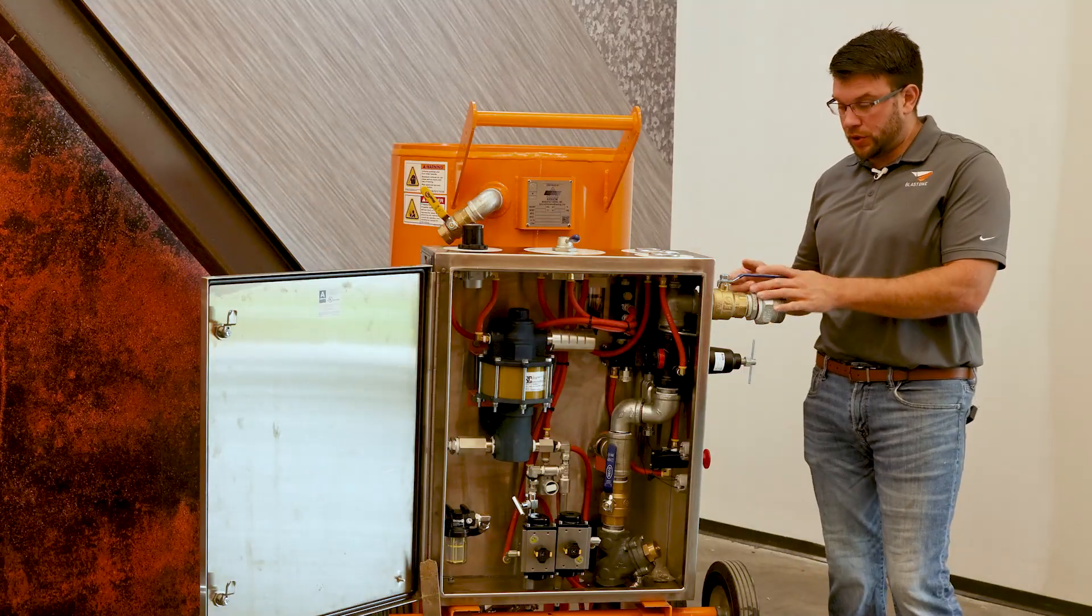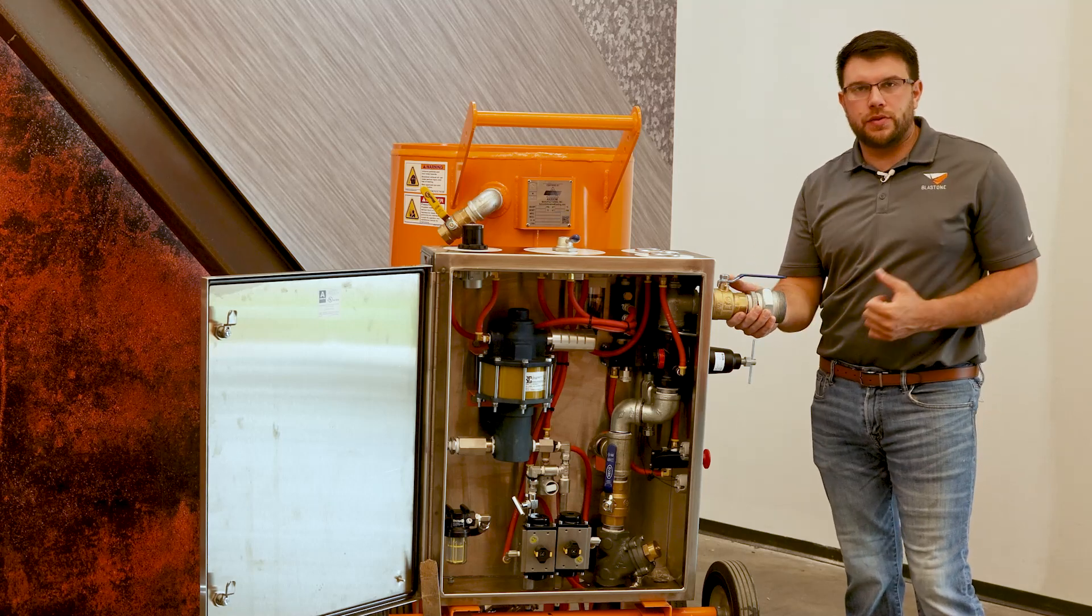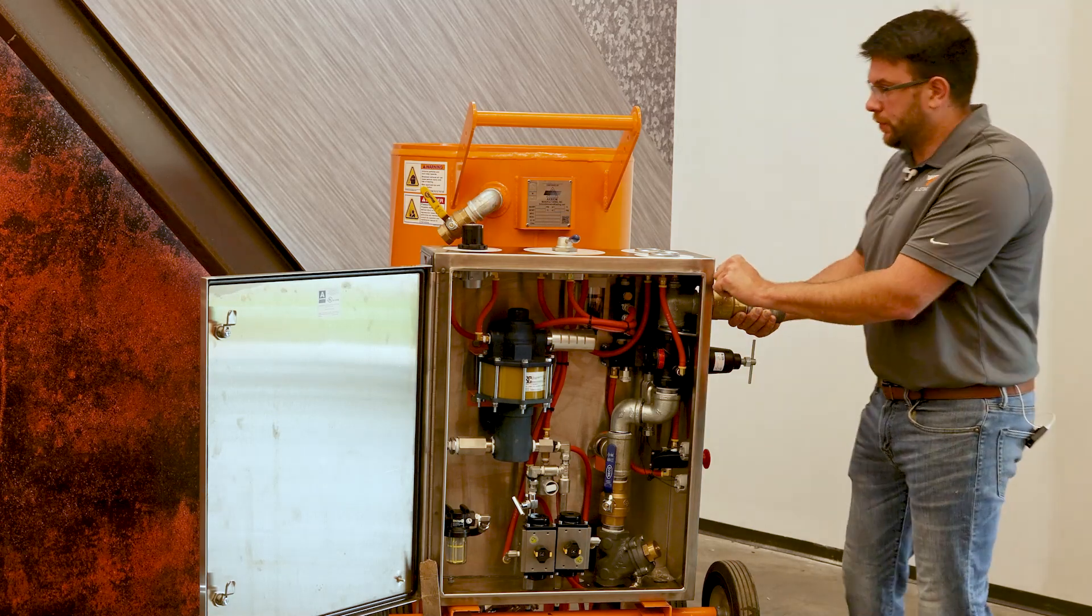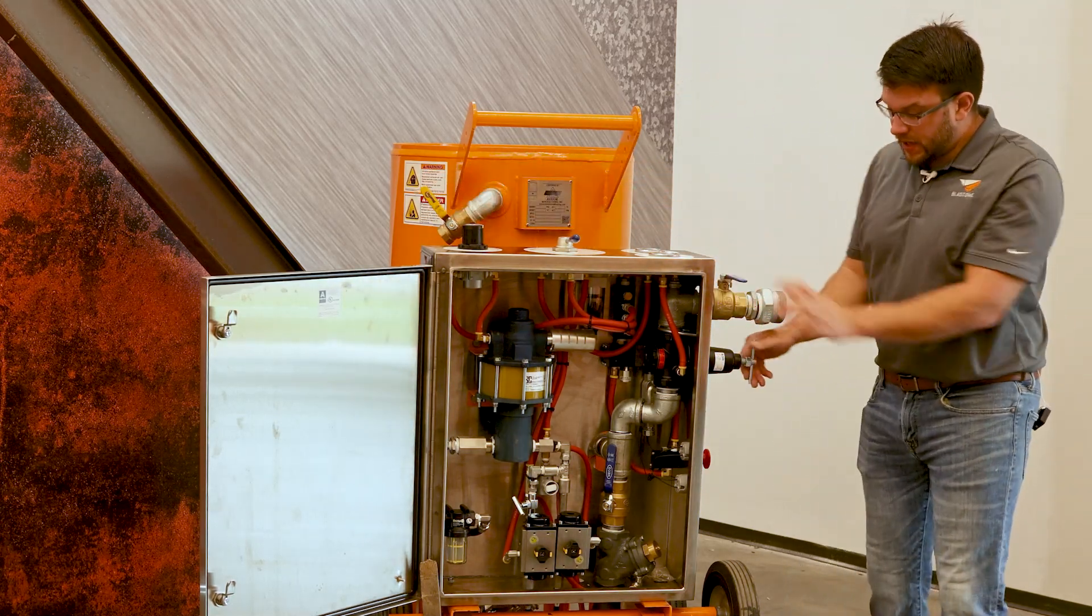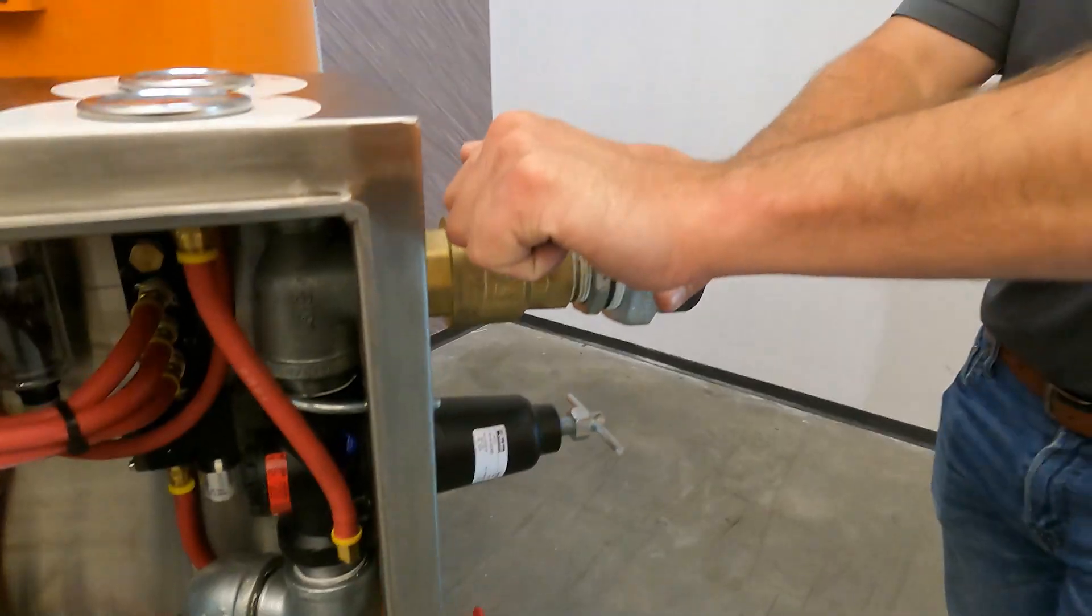So the first thing you're going to want to do is hook up your supply air line. Make sure you have whip checks and make sure the air is ran through an air dryer and it's properly dried. The next thing you're going to want to do is make sure your dump valve is closed, make sure your e-stop is pulled out, and then open up supply air pressure.